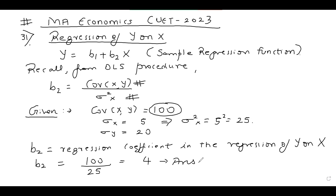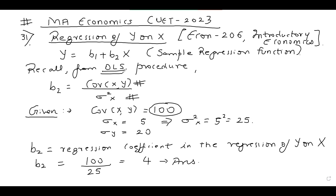Where will students find all the theory for this? You can check out my Econ 206 course on introductory econometrics. In that course, we have done linear regression in depth — the ordinary least squares procedure which minimizes the summation of EI squared, where EI denotes the residuals. Just apply this formula and you get B2 = 4, which is the regression coefficient in the regression of Y on X. The correct answer is 4.